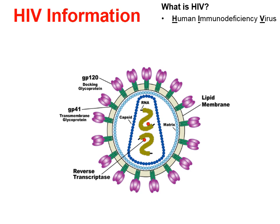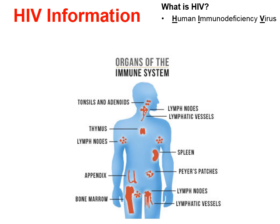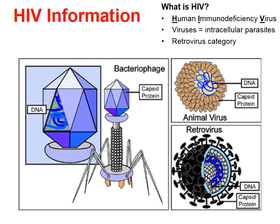HIV stands for human immunodeficiency virus. Human because it infects humans. Immunodeficiency because it weakens our immune system. It's a virus — specifically an intracellular parasite that lives inside our cells — and it's in the category of a retrovirus. Retroviruses are RNA viruses that contain reverse transcriptase and turn their RNA backwards into DNA.